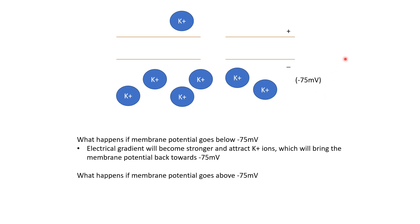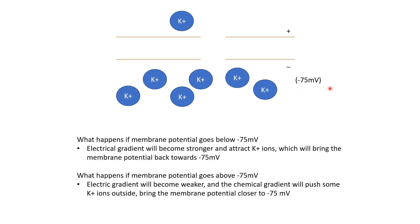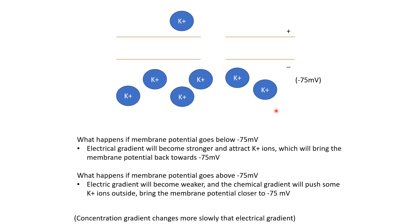Similarly, if the membrane potential is above minus 75 — say minus 60 or minus 20 millivolts — the chemical gradient remains the same but the electrical gradient pulling potassium in becomes weaker. So the net movement of potassium ions is now from inside to outside. As potassium ions move out, the membrane becomes more negative, moving from minus 20 toward minus 30, minus 40, minus 50, and eventually back to minus 75 millivolts. In both cases — above or below — potassium ions move to return the membrane potential to minus 75, which is the equilibrium potential they strive to achieve.